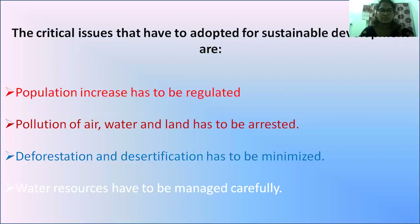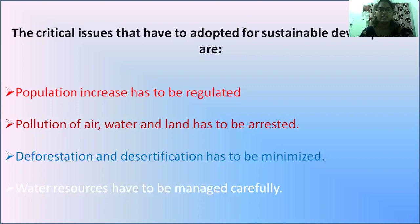The various issues addressed for sustainable development include: population has to be regulated; conservation of biodiversity, including plant and animal species; and reduction of pollution. Additionally, increasing infiltration capacity is also a key issue.